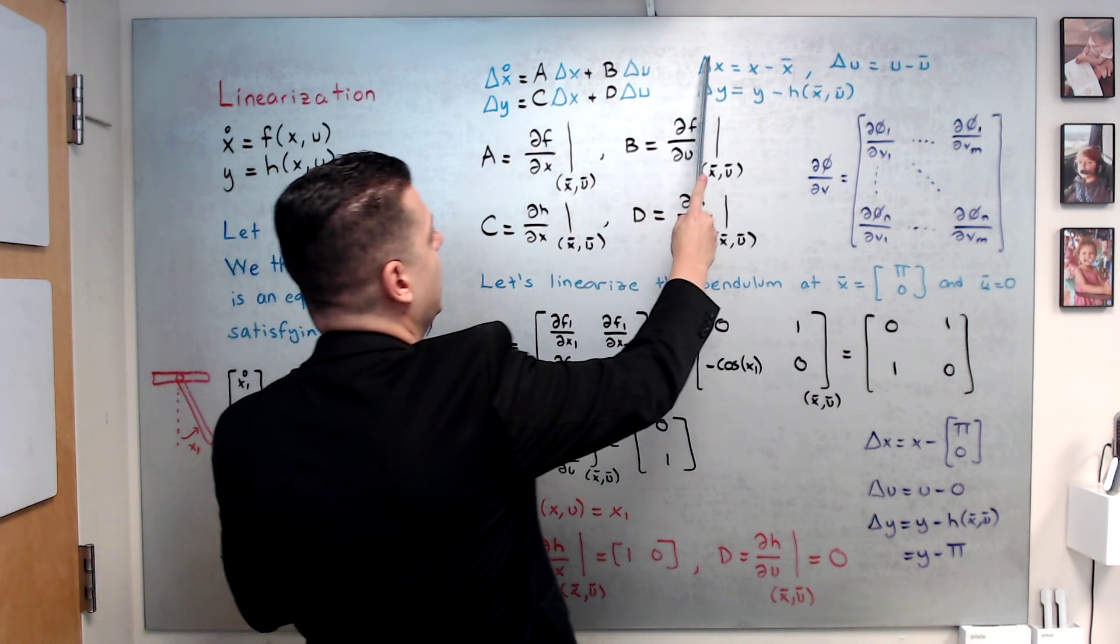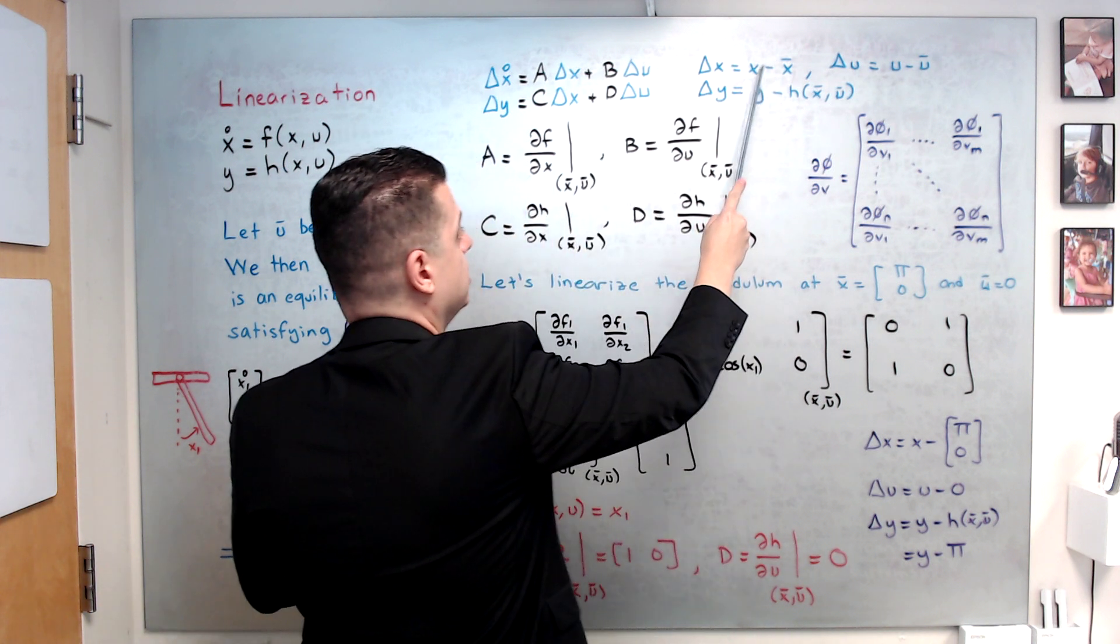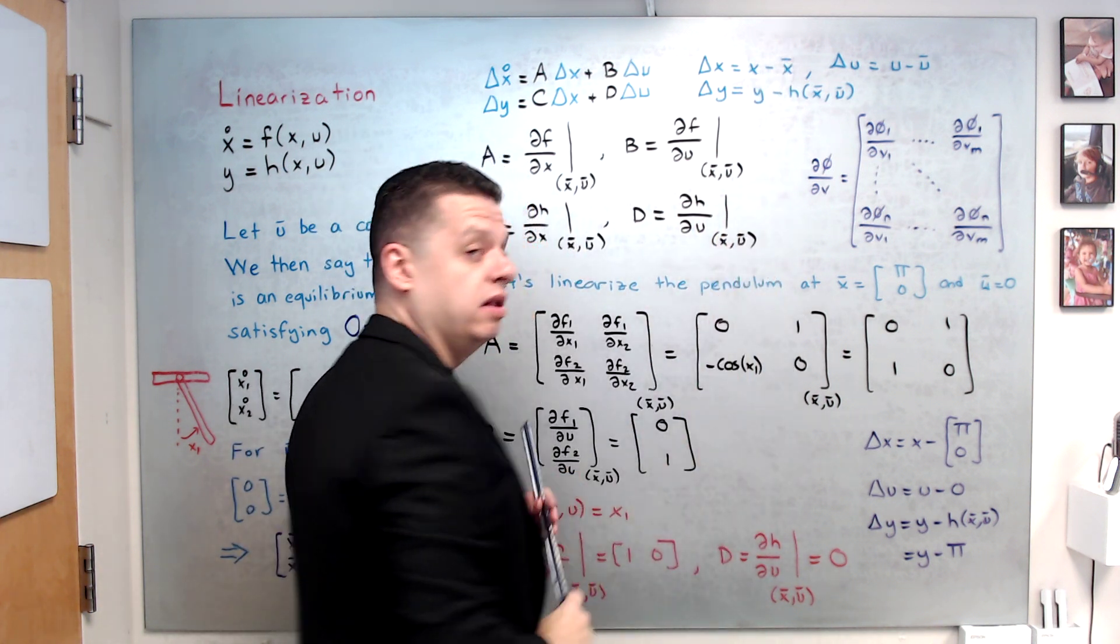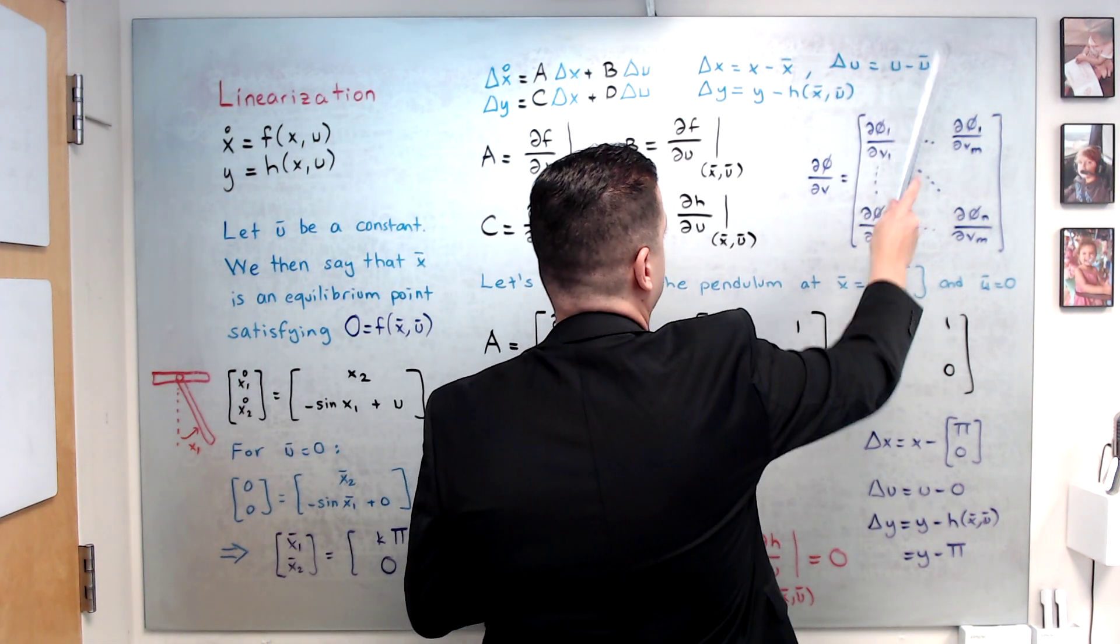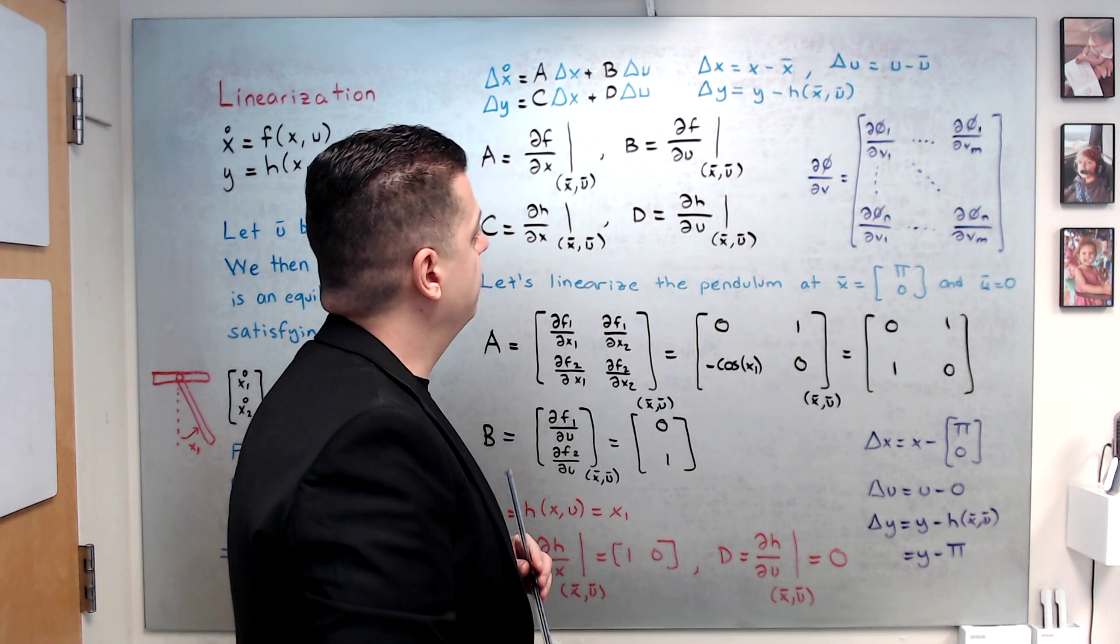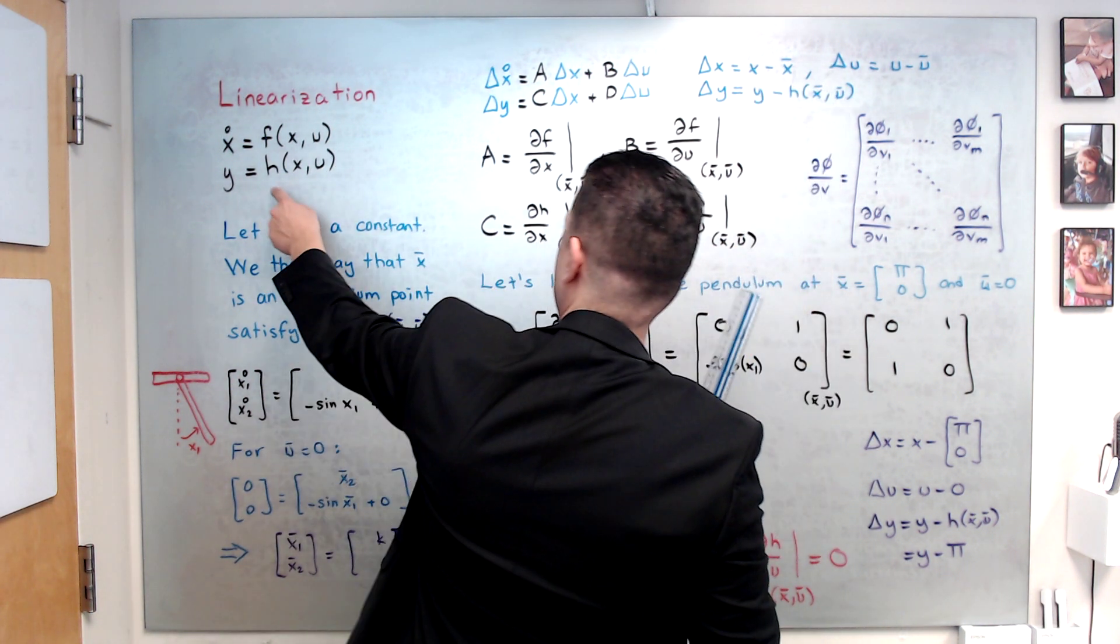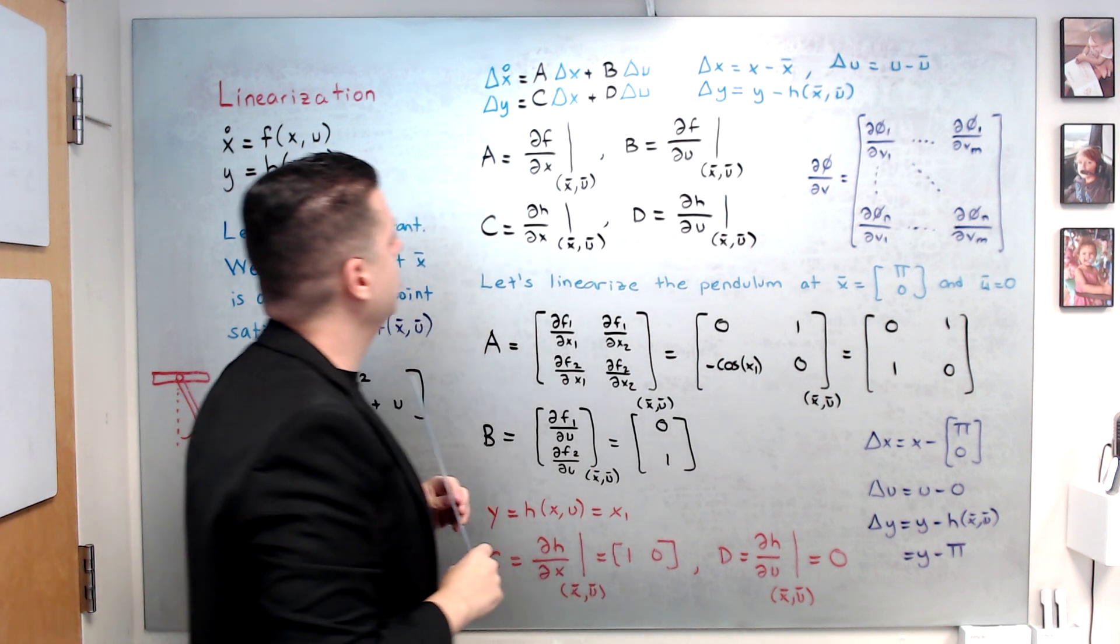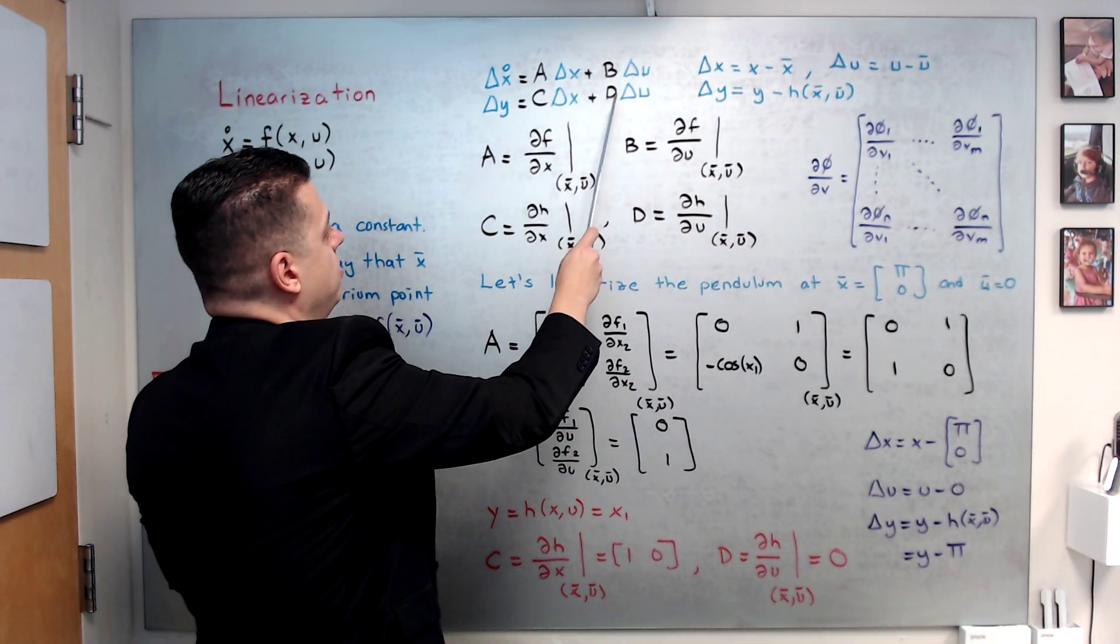All right, this brings us to this linearization process. I will go step by step. First of all, you need a linear time-invariant model at an equilibrium point. So let's first define delta x to be x, the actual state of this nonlinear system, minus x bar, the equilibrium point that you are interested. Delta u is u minus u bar, and delta y is basically y minus h(x bar, u bar), that we are using this h equation. Then, for an equilibrium point, we need a, b, c, d matrices.